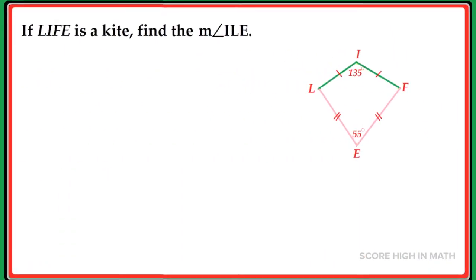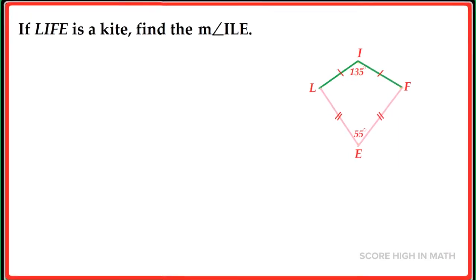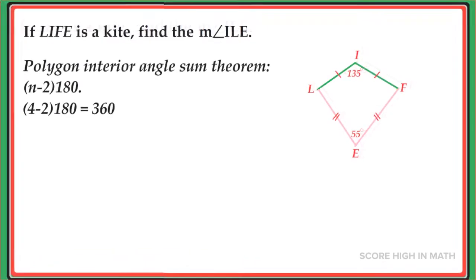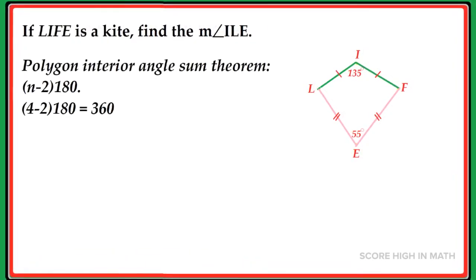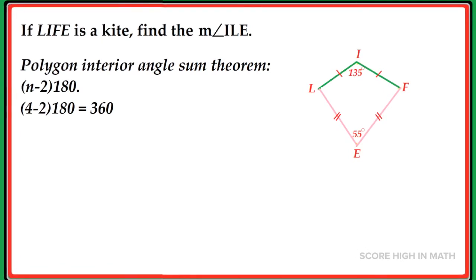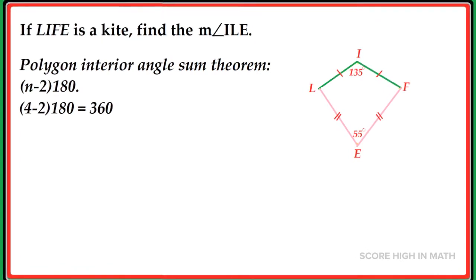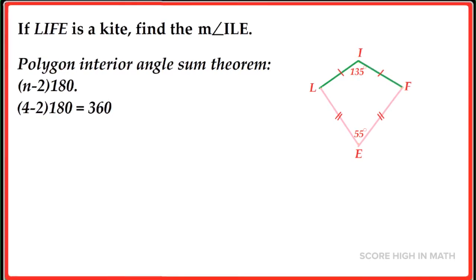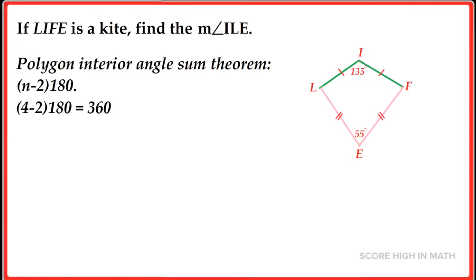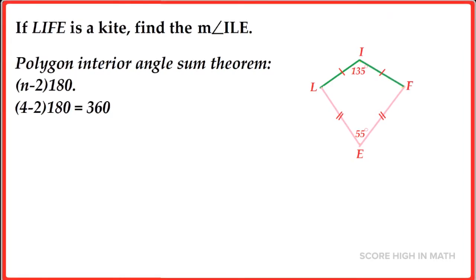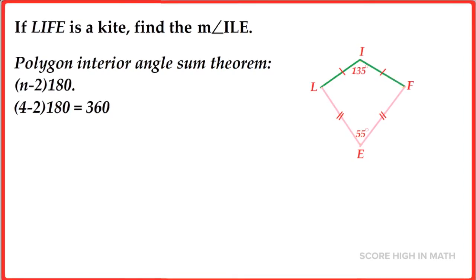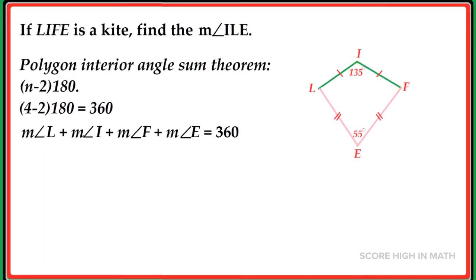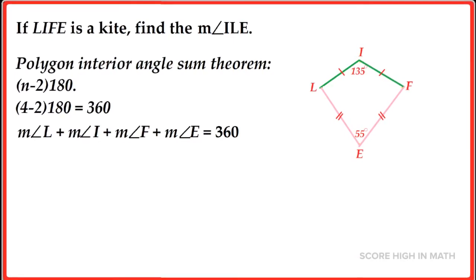Let us work on another example. If LIFE is a kite, find the measure of angle ILE. The two angles of the polygon are given here, and we have four sides, so we can use the polygon interior angle sum theorem, which is the number of sides minus 2 times 180. So 4 minus 2 times 180 is equal to 360, that is the interior angle sum.